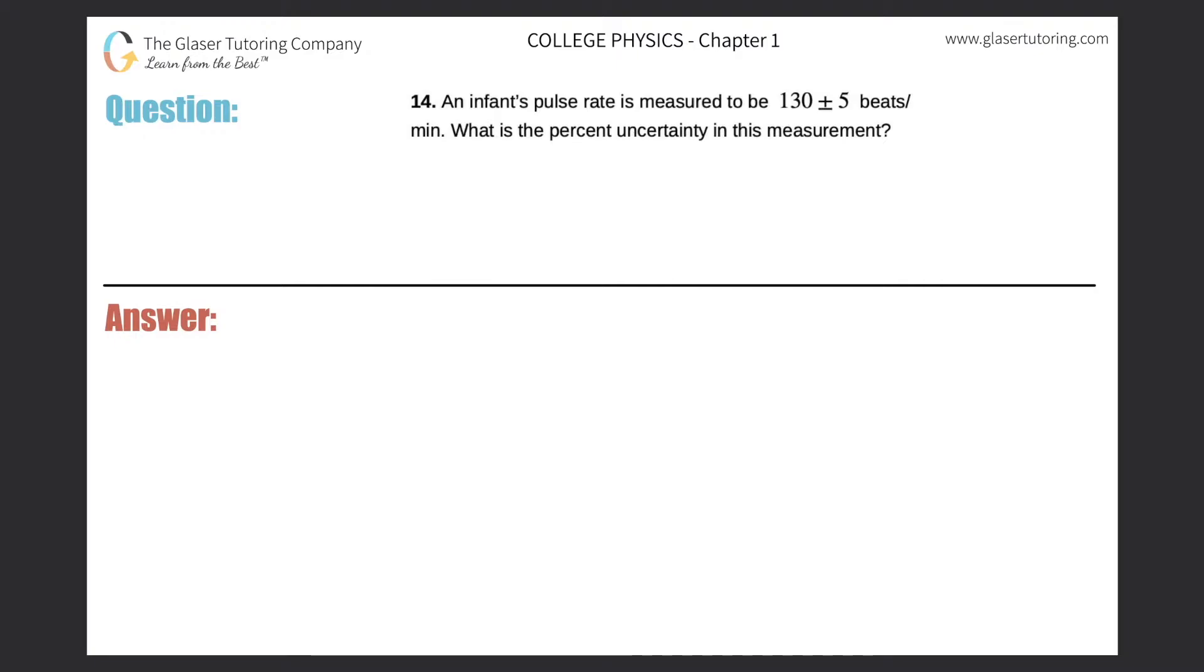Number 14. An infant's pulse rate is measured to be 130 plus or minus 5 beats per minute. What is the percent uncertainty in this measurement?